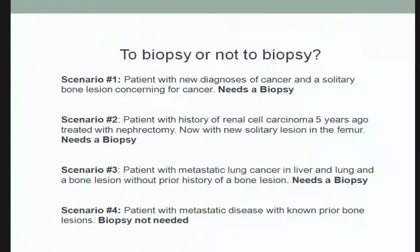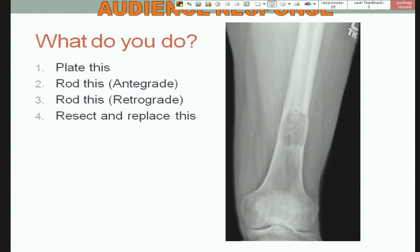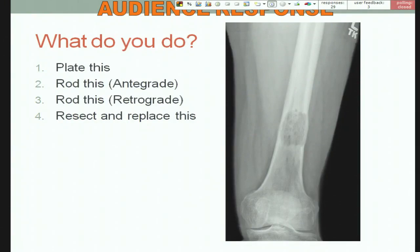One technical tip when doing your antegrade nail: people sometimes think it won't be long enough distally, but you just need to take it all the way down to the physeal scar. You need to stay very posterior in the distal segment — you can gain an extra centimeter and a half to three centimeters by staying posterior. Also, because this lesion looks contained, I would vent it before starting reaming — open the lateral cortex, make a hole, so you don't potentially shower the patient with tumor debris.